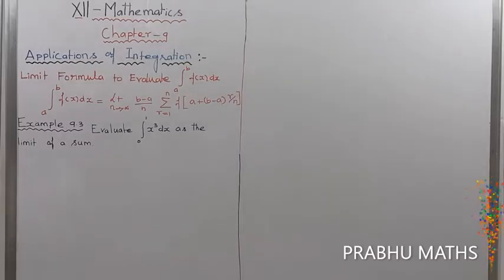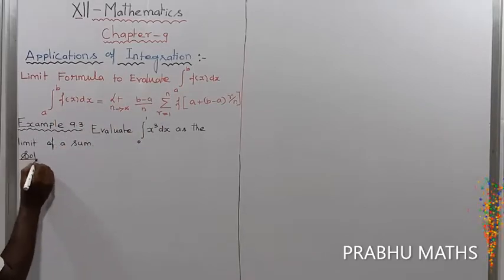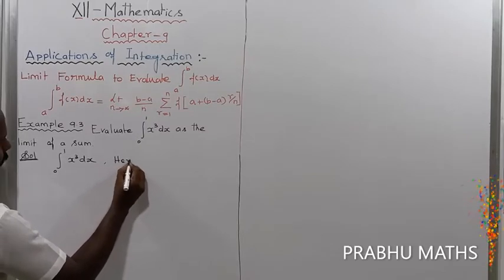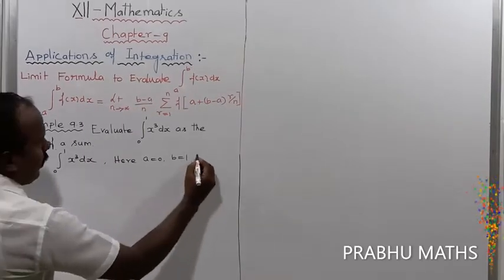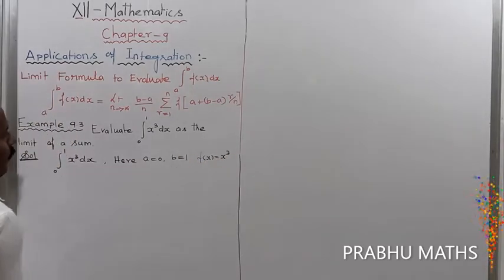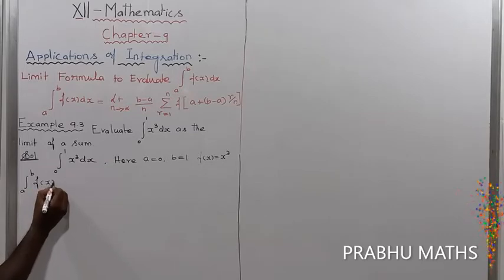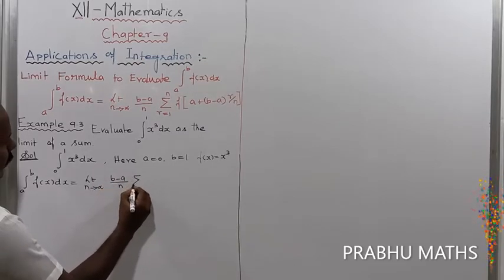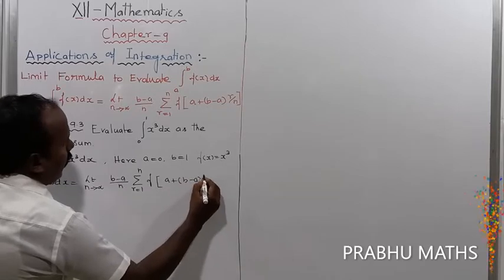Example 9.3: Evaluate the integral from 0 to 1 of x³ dx as a limit of the sum. Using the limit of sum formula: the integral from a to b of f(x) dx equals limit as n tends to infinity of (b minus a) divided by n, times the summation for r from 1 to n of f of a plus r times (b minus a) divided by n.